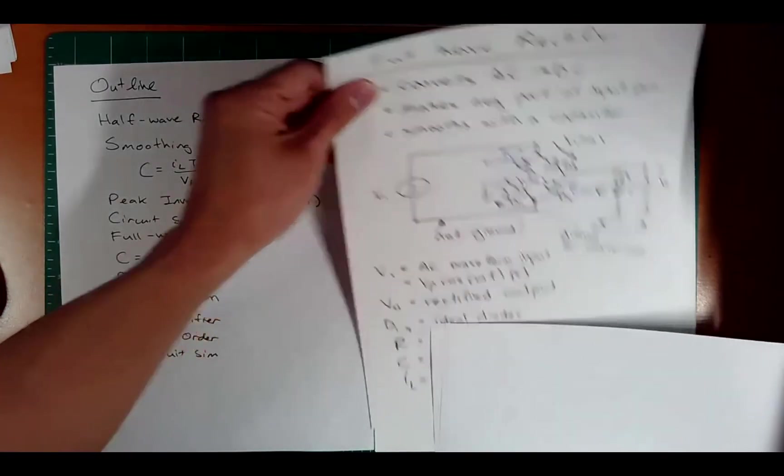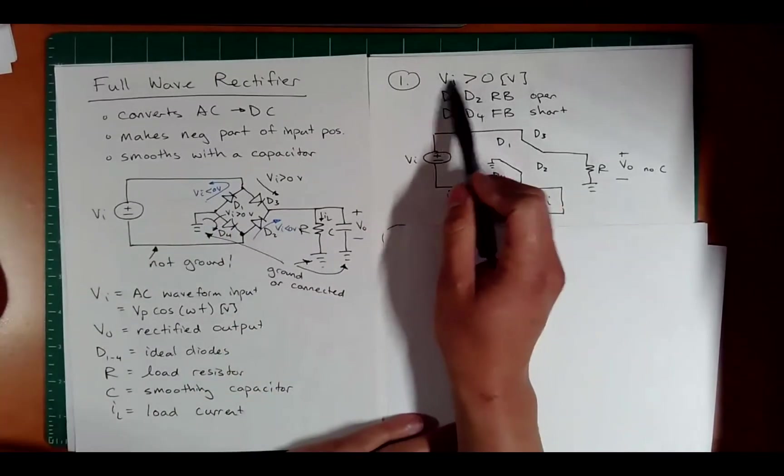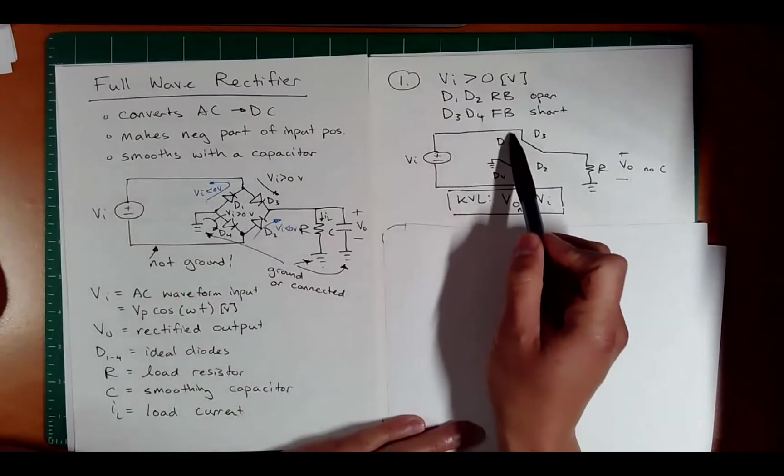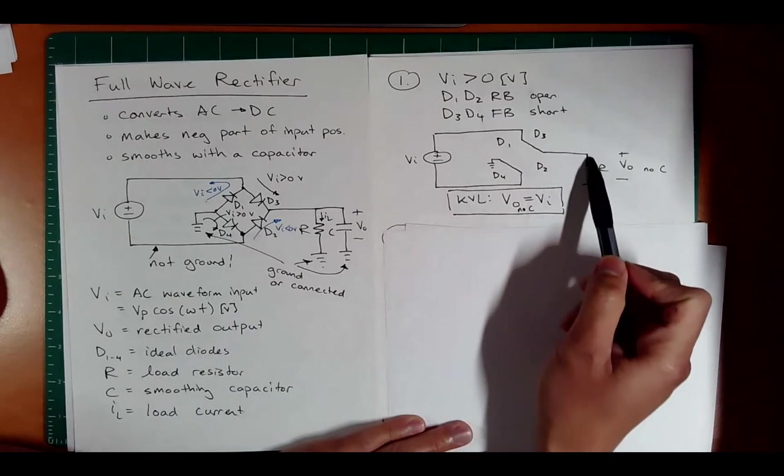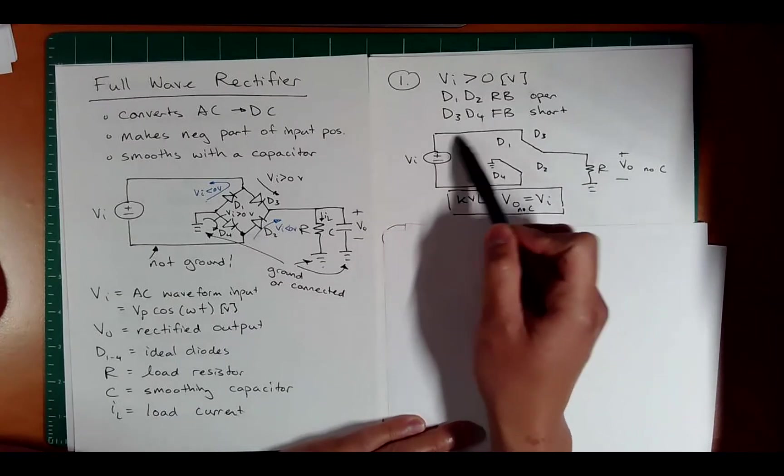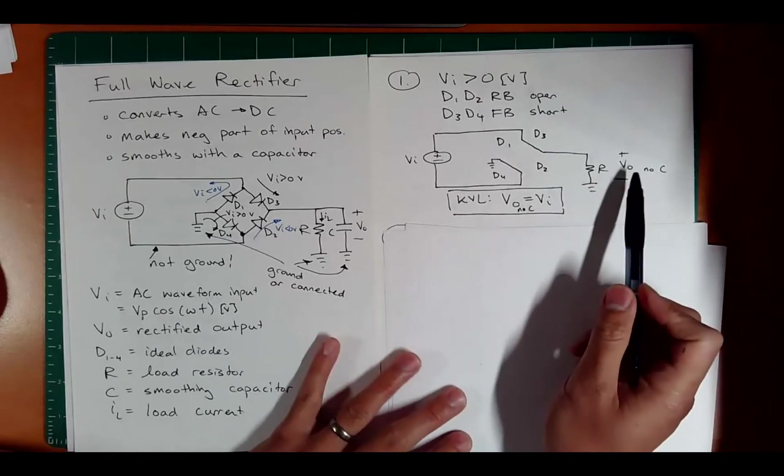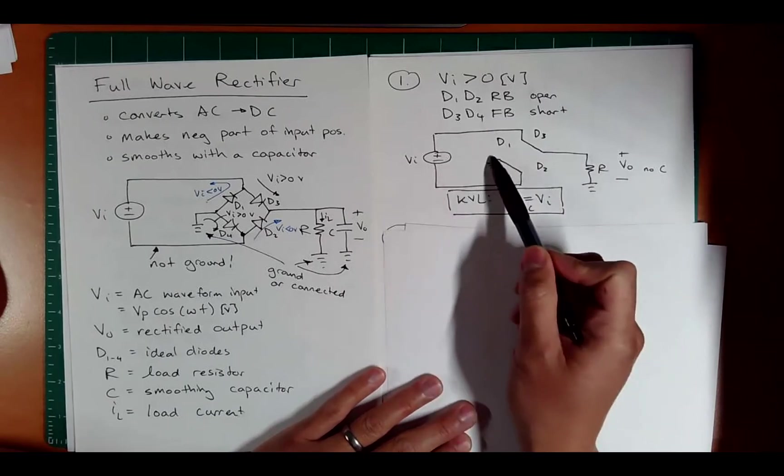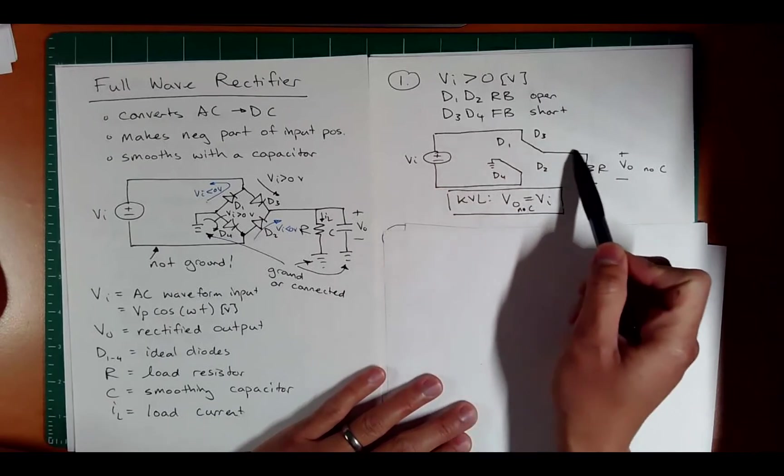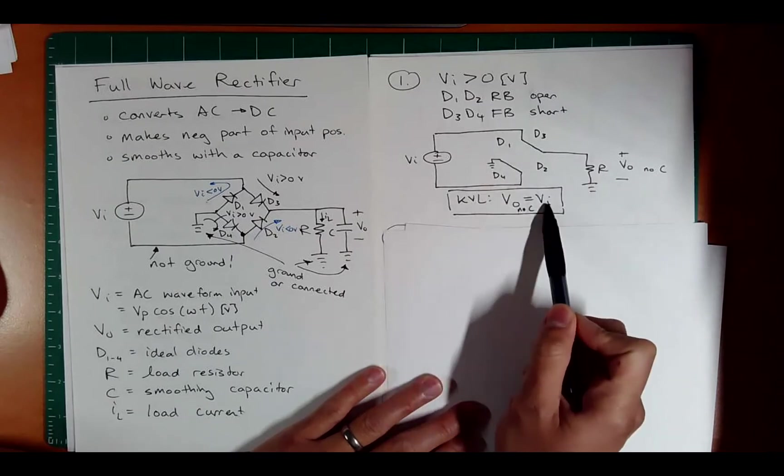And so I have that drawn individually here, where in the first case, VI is positive and you can see that the diode current is, diode 3 and diode 4 is going to allow current. And so it goes through here and back, so diode 3 and diode 4. And notice if you do a little KVL, the output voltage without a capacitor will actually be the same as the input voltage. You can say minus VI plus VO is equal to zero. And so Vout equals VI.